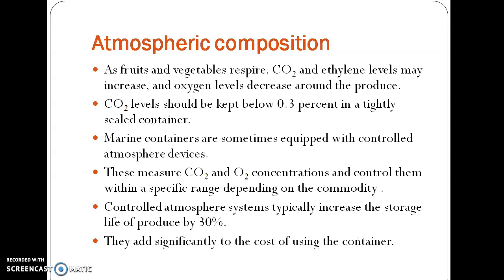Atmospheric composition refers to the carbon dioxide and oxygen levels around the produce. As ethylene levels increase during respiration, carbon dioxide concentration increases and oxygen level decreases around the produce. To control these gas changes, marine containers should be equipped with controlled atmosphere devices. Such a system can increase the storage life of the produce by 30 percent, though it adds significantly to the cost of the containers.